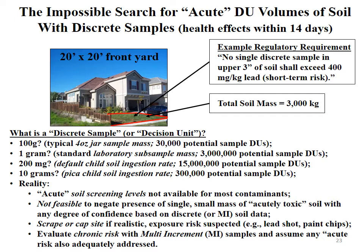With 3 million potential one-gram discrete masses of soil in this front yard, how many samples do I need to collect to demonstrate no single one exceeds 400 ppm? If I test 3, 4, 5, or even 10 random one-gram masses out of 3 million, you'd never have any degree of confidence that the other millions of potential masses you didn't test are less than 400 ppm. In terms of risk, the default child soil ingestion rate is about 200 milligrams per day — now we're talking about 15 million potential 200-milligram masses in this front yard. How many do I need to test to demonstrate no single discrete mass exceeds 400 ppm? It can't be done.